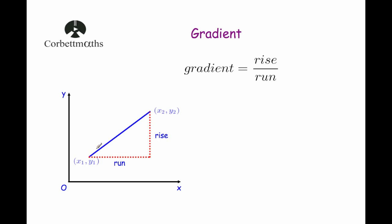Here we've got two points joined by a straight line — the point x1, y1 and the point x2, y2. If I ask my younger students how to work out the gradient of this line, they would sketch a right angle triangle. They would work out the rise by taking the height of one point away from the other, work out the run by subtracting the x coordinates, and then do rise divided by run to get the gradient.